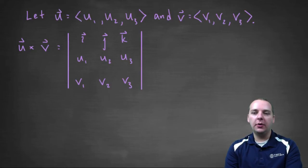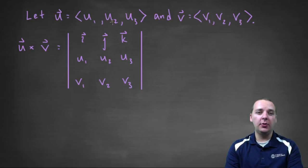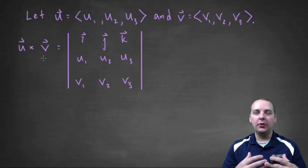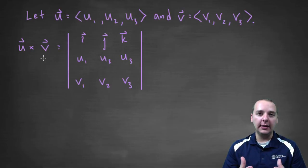Alright, so let's say we have one vector we'll call it u1 comma u2 comma u3 and a similar vector for vector v. And you want to take their cross product. The way that you get a cross product is you have to do a determinant of a 3 by 3 matrix.